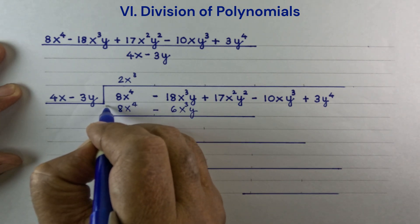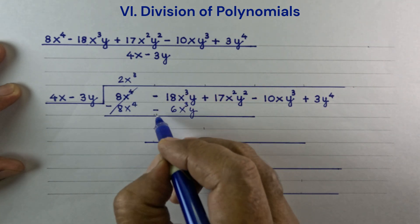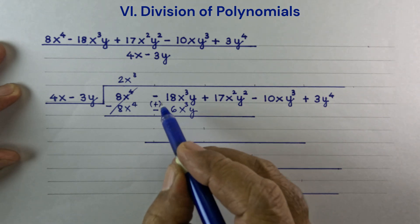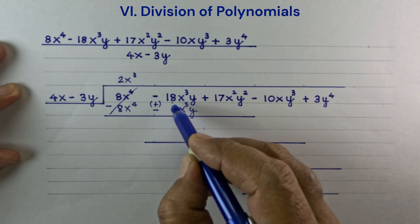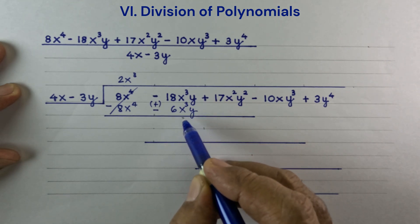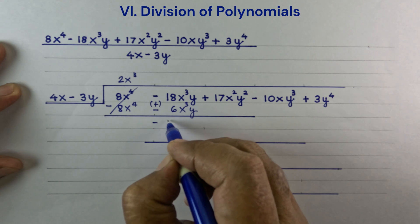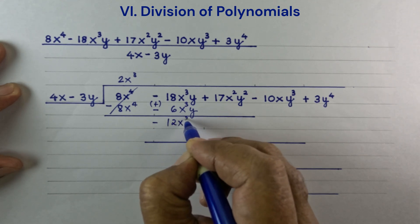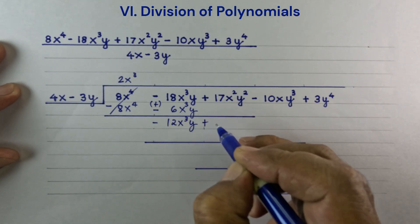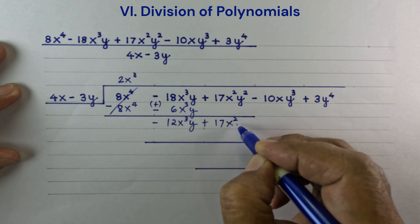Now let us subtract. 8x to the 4th cancels out. The minus sign becomes plus, so minus 18x cubed y plus 6x cubed y is minus 12x cubed y. Now let's bring down plus 17x squared y squared.